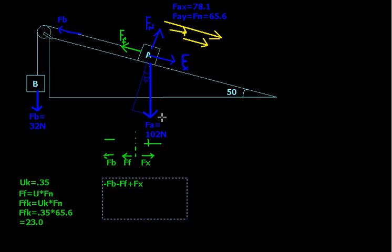Okay, where we left off, we just finished drawing this all out. We figured out what the force of friction is. We figured out the force of this block — that was kind of given to us. And we figured out what the force of gravity is pulling along the ramp.